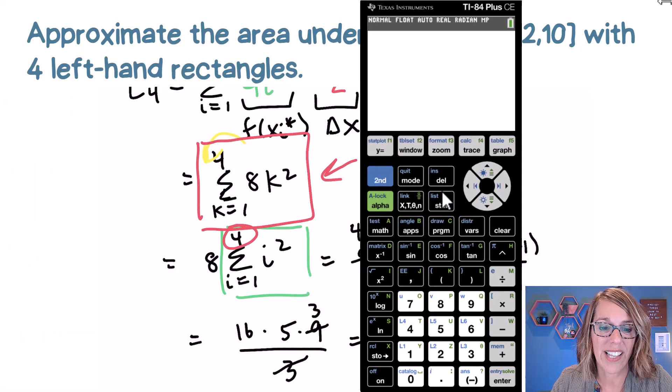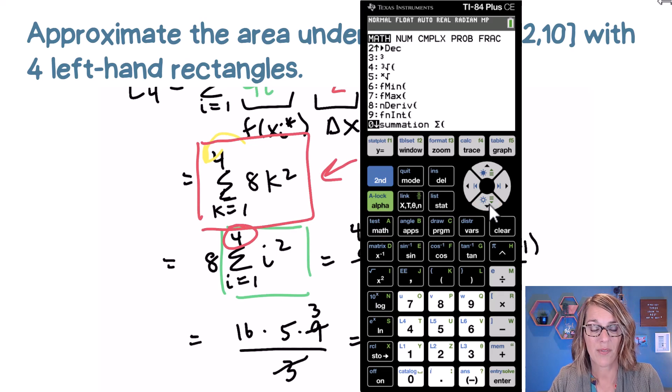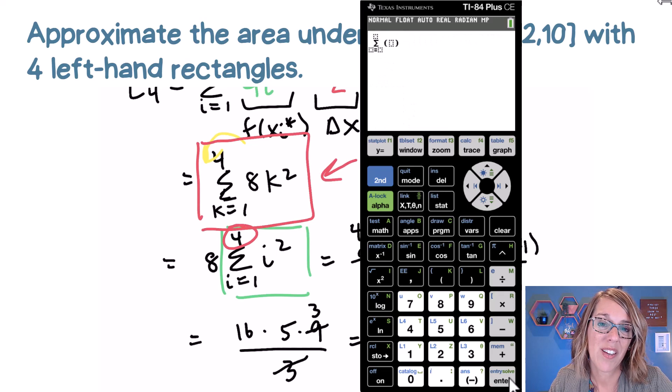So in my calculator, I want to go to the math menu. So I go to math, and then I arrow down until I find the summation function, which is right here, it's zero on my calculator, and then hit enter. It wants your index first, that's your counter k. To get to that one, I'm going to hit my alpha key, followed by the parenthesis. And that's where the k lives.